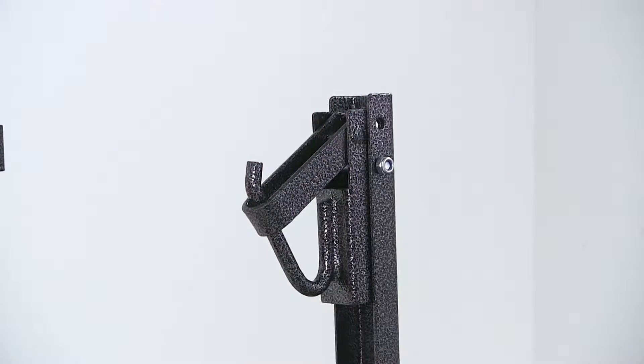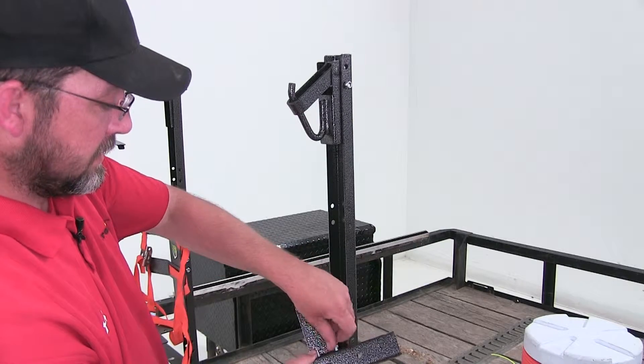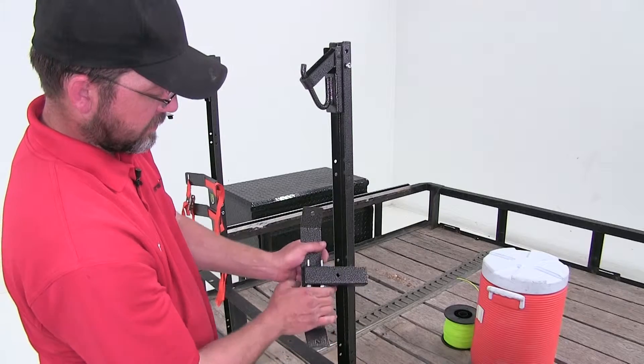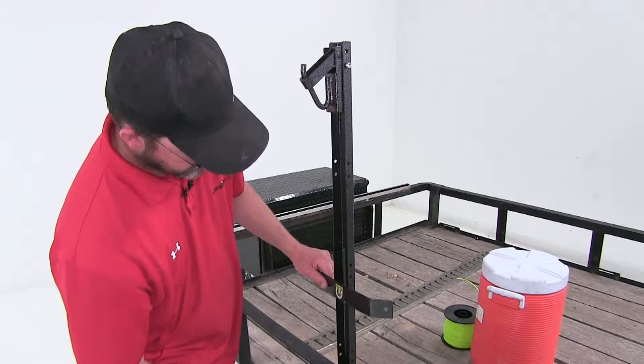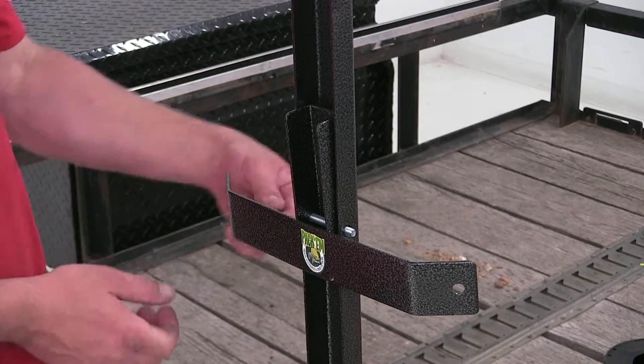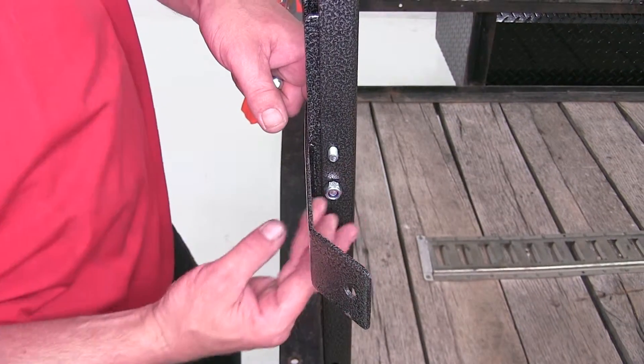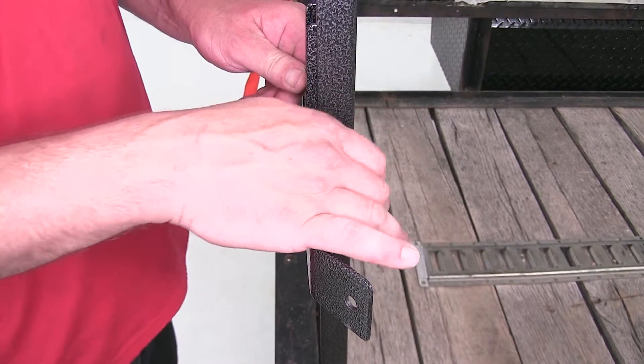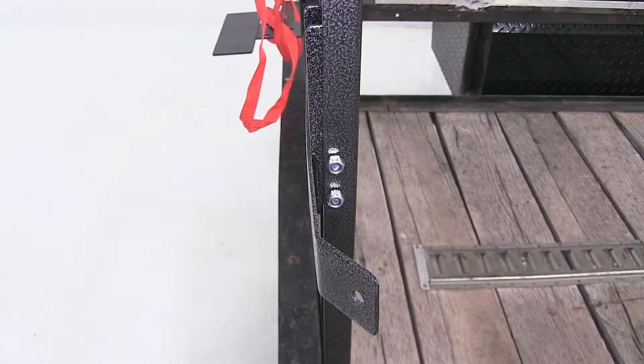Let's go ahead and secure the bottom mount. The bottom mount is going to have two bolts and nuts, just like our other attachment points on the other rail. So we'll go ahead and remove our hardware, line it up, and secure it. Alright, now with all our hardware in place, let's go ahead and tighten it down.